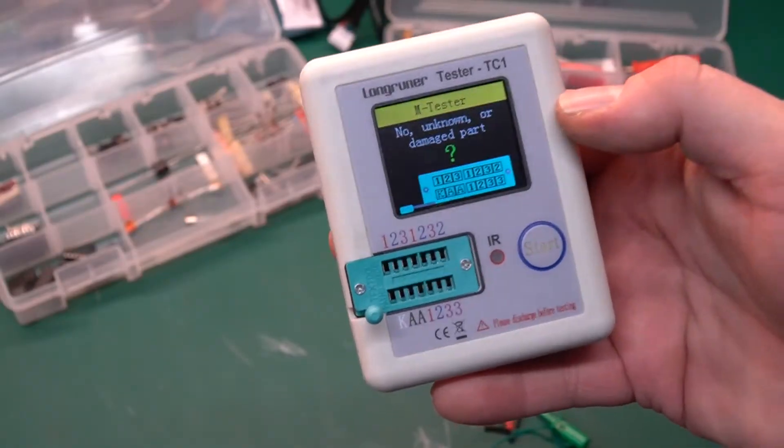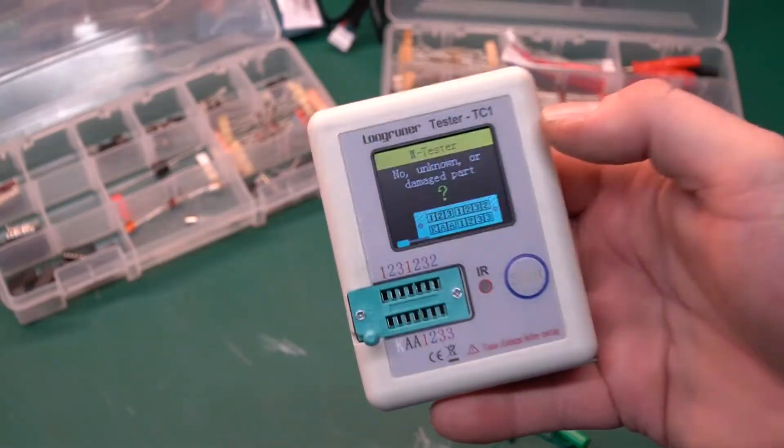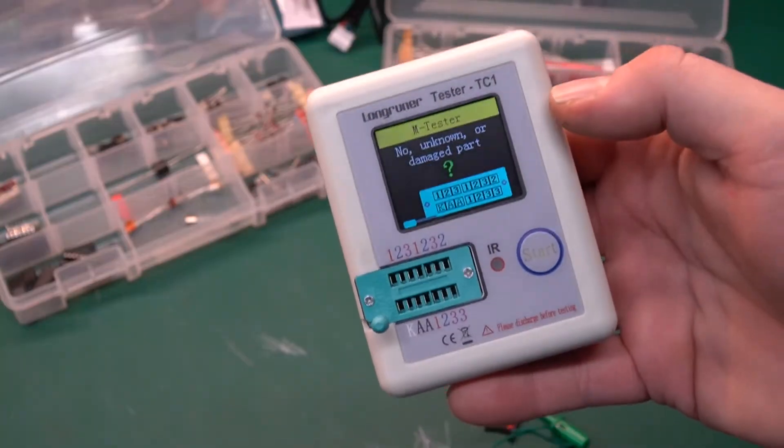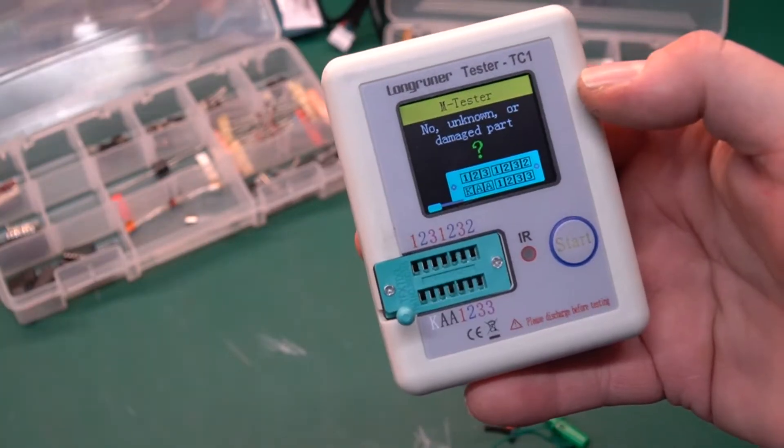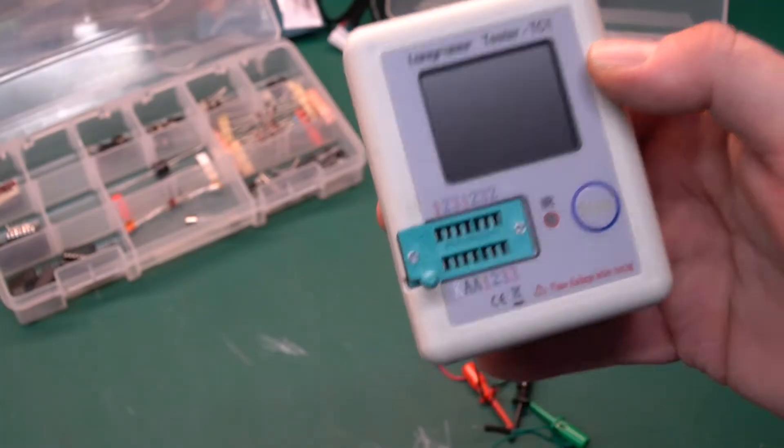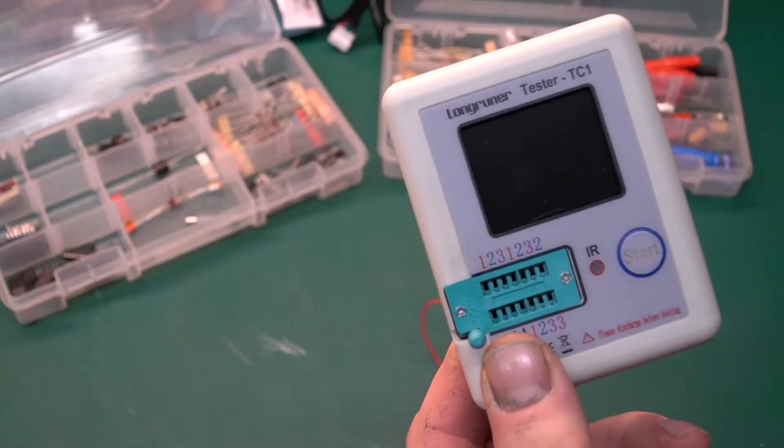Today we're going to be talking about a pretty cool little tool, an electronics component tester. It tests diodes, capacitors, and things like that. We'll run it through a gamut of tests and show you how it works. It's made by LongRunner and it's the TC1. It's been around a couple of years now, works really well, and as usual I will put a link down below to everything in this video just in case you're interested.